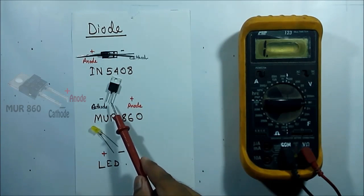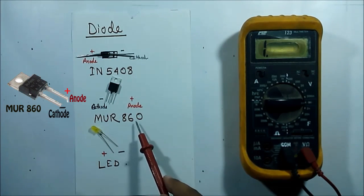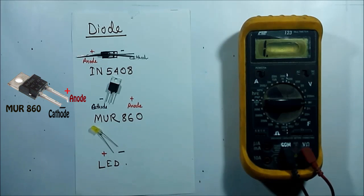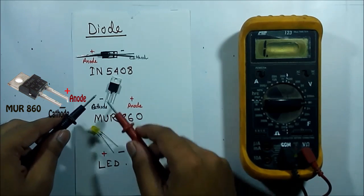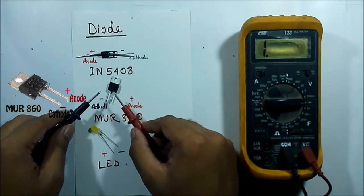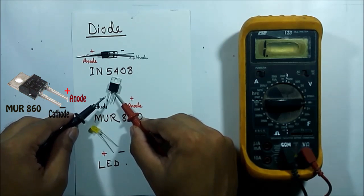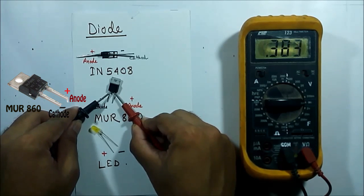Now we'll measure this diode — it also has two terminals. This is the MUR 860. The same procedure is followed: I am connecting the red lead to the anode and the black lead to the cathode, and I get a result which is 0.38. So current can flow from anode to cathode.